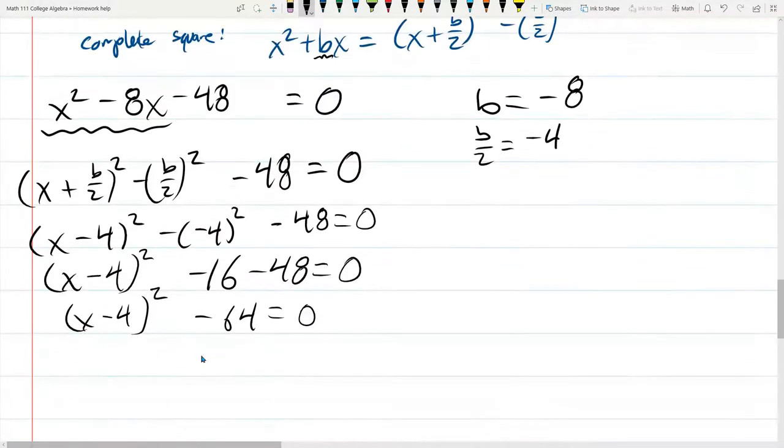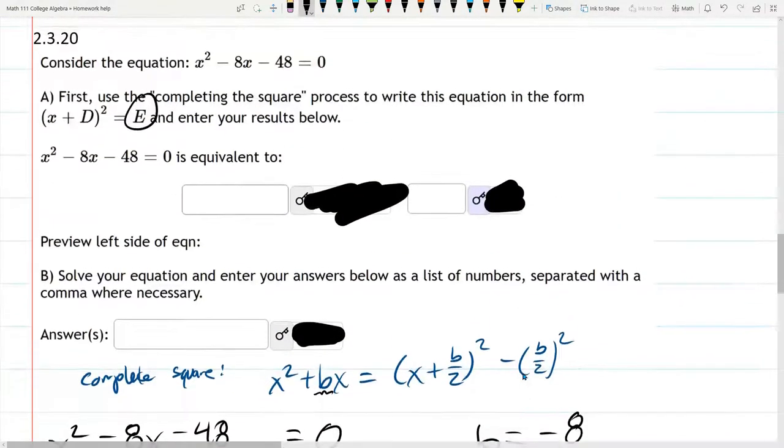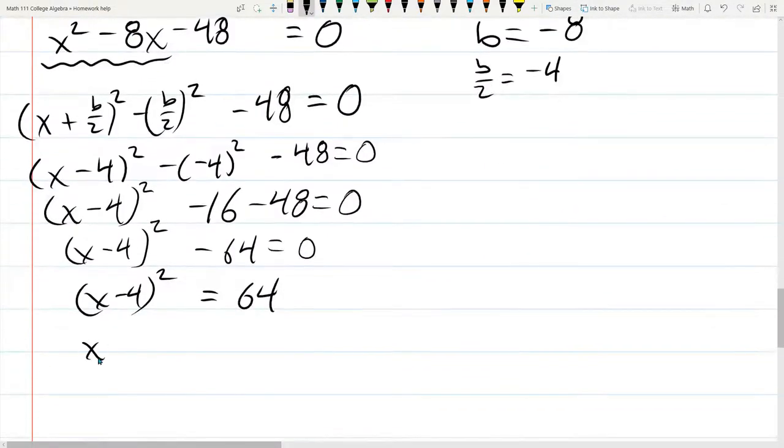So we're going to add 64 to both sides. So we got 4, negative 4 and 64. Let's see how they want us to write it. Now, they want x plus what?